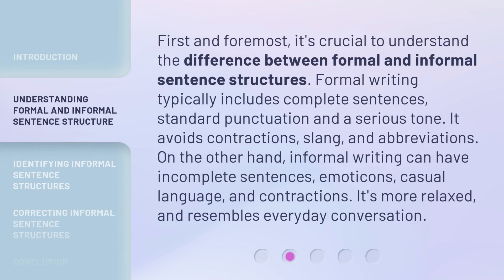First and foremost, it's crucial to understand the difference between formal and informal sentence structures. Formal writing typically includes complete sentences, standard punctuation, and a serious tone. It avoids contractions, slang, and abbreviations. On the other hand, informal writing can have incomplete sentences, emoticons, casual language, and contractions. It's more relaxed and resembles everyday conversation.